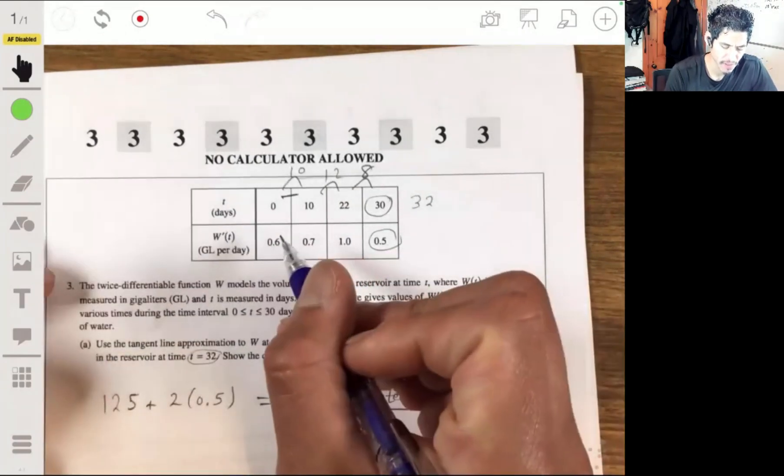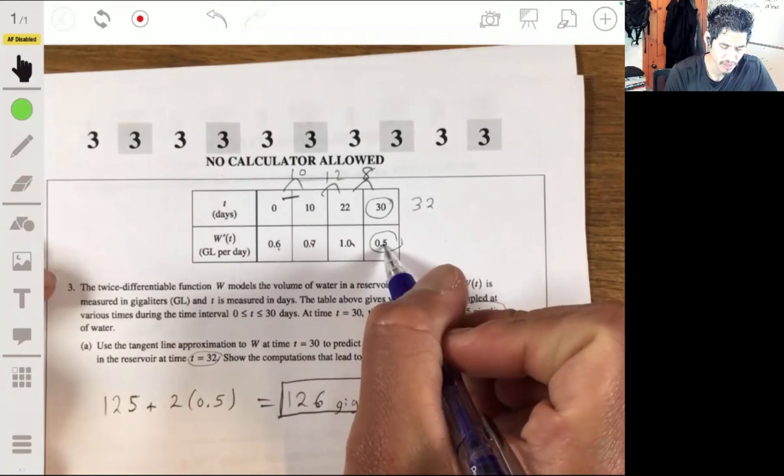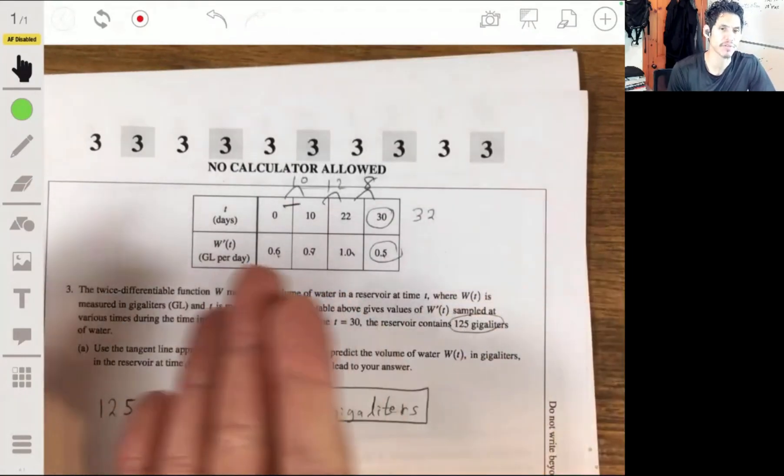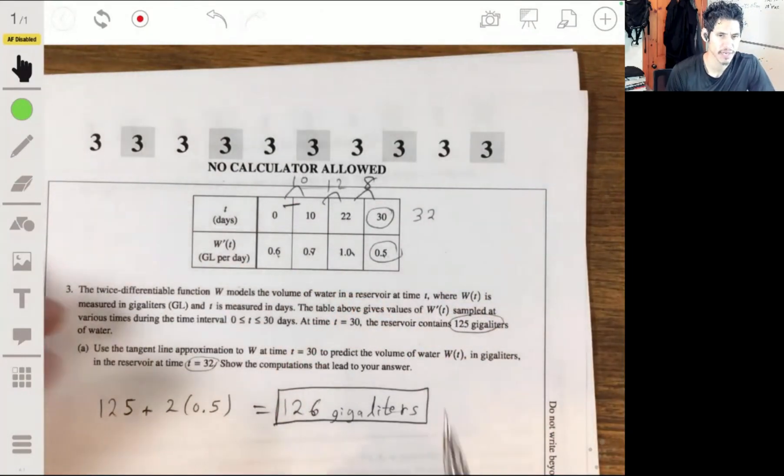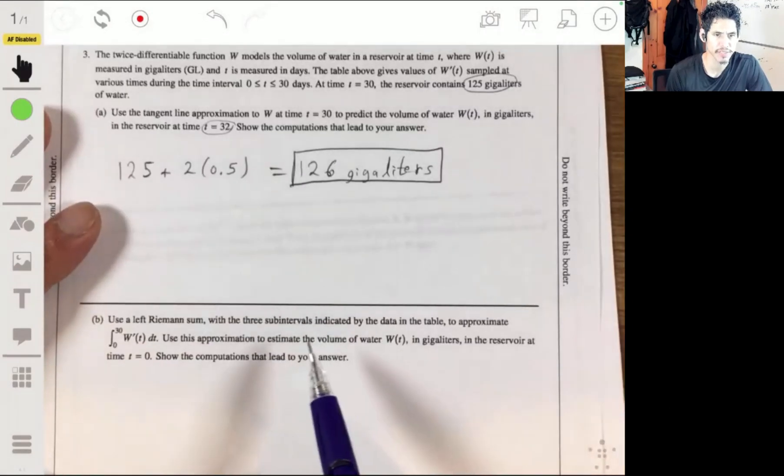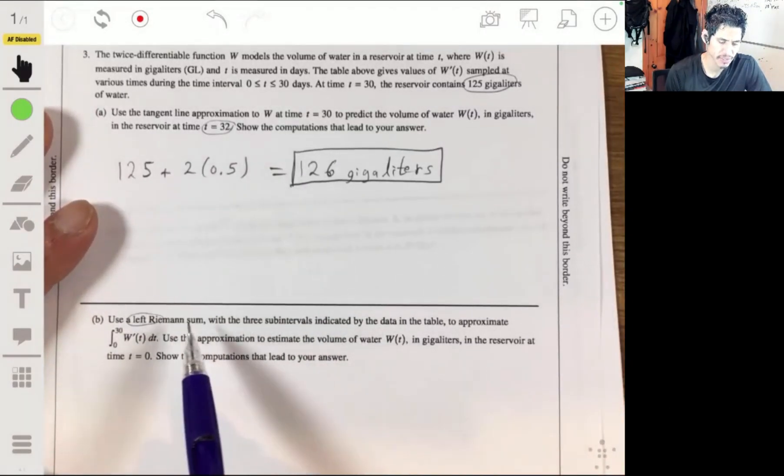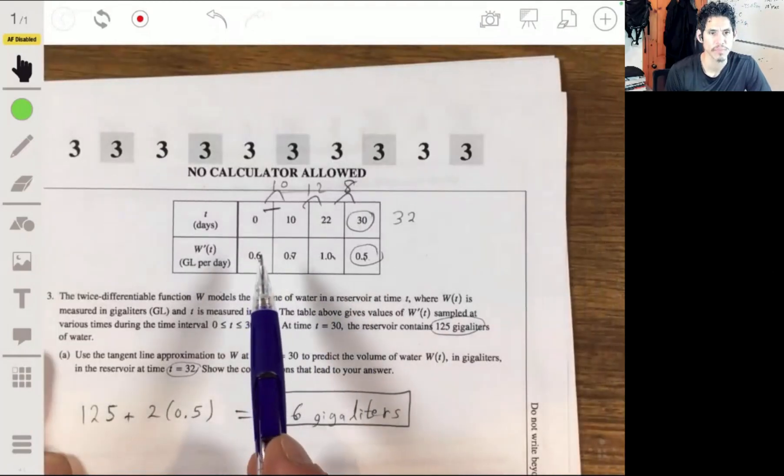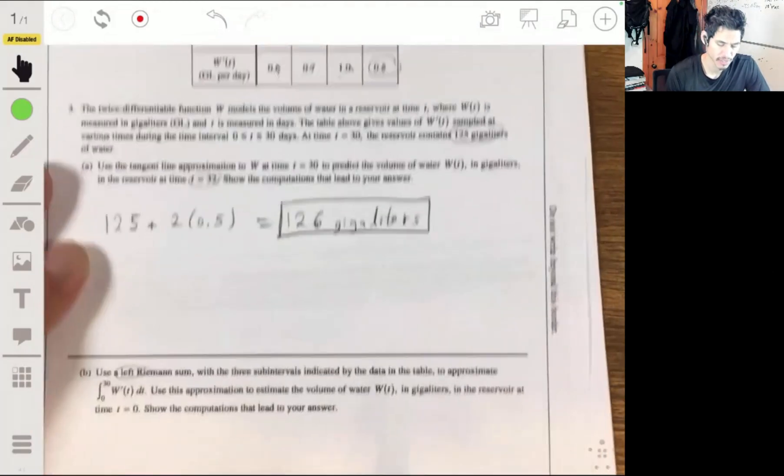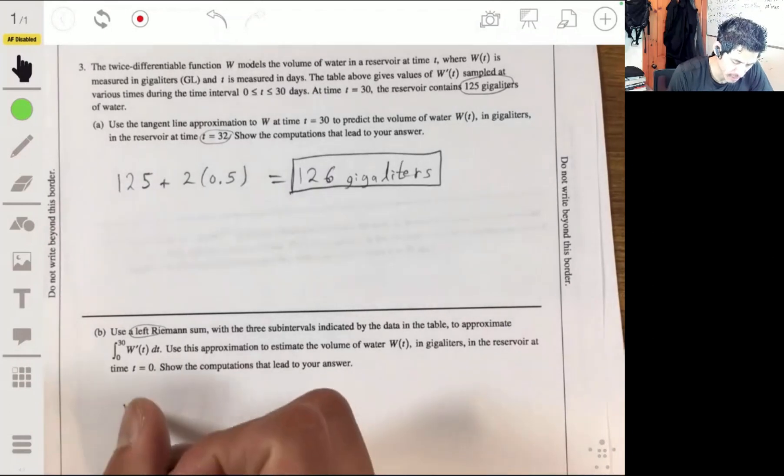The heights will just be these values, but remember, we can only use three of them, and it'll tell us which three to use because it tells you either right-hand or left-hand. It tells you to use the left, so we just use the left ones. The 0.6, the 0.7, the 1.0.